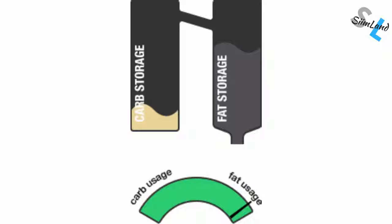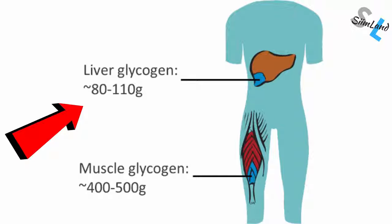How fast you're going to start burning body fat depends on your body's overall energy demands, and how fast you're going to burn through that liver glycogen. There are 100 to 150 grams of glycogen in the liver, which takes about 18 to 24 hours of fasting to be depleted.